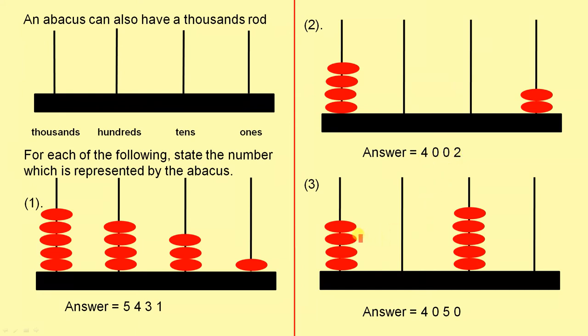We have 4 rods in the thousands column here. None in the hundreds, 5 in the tens, and none in the ones. So the number is 4,050.